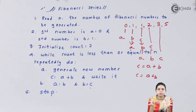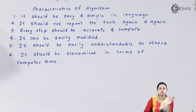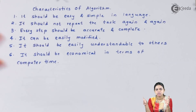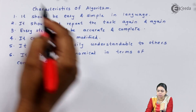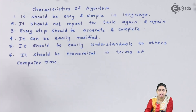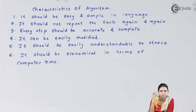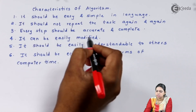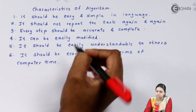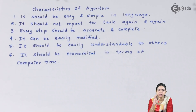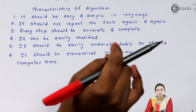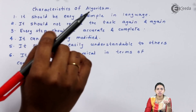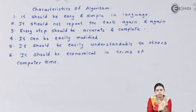Now, there are some characteristics of an algorithm. First, it should be easy and simple in language — written in simple English so it is easily understandable to others. Second, it should not repeat the same task again and again. Third, every step should be accurate and complete. Fourth, it can be easily modified. Fifth, it should be economical in terms of computer time, meaning it should not be too long and should not repeat tasks unnecessarily.